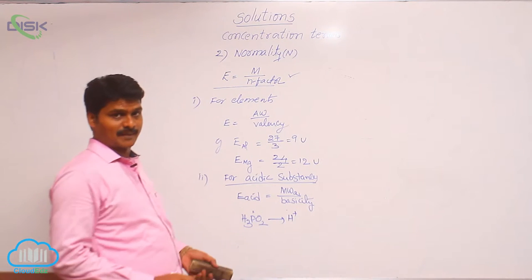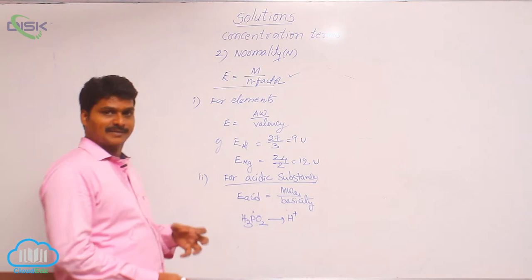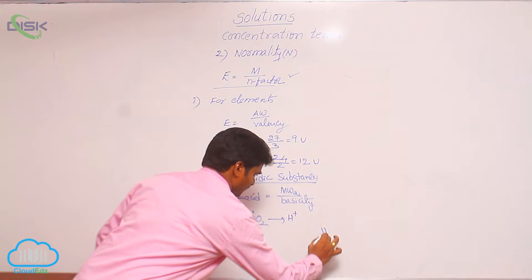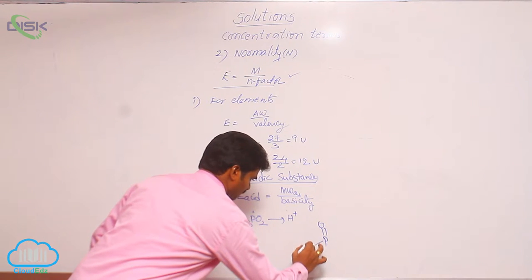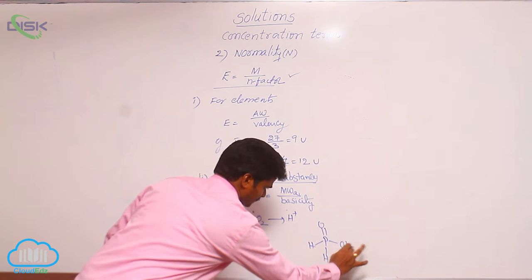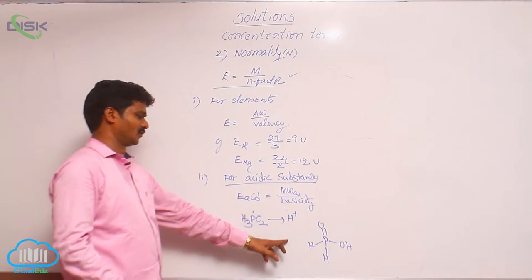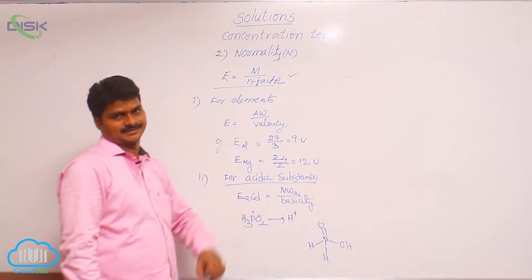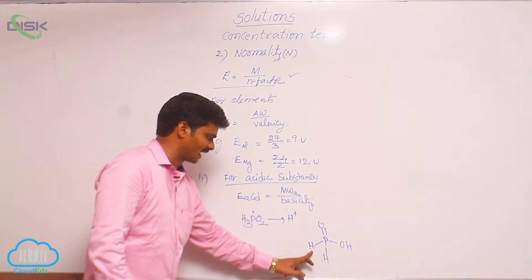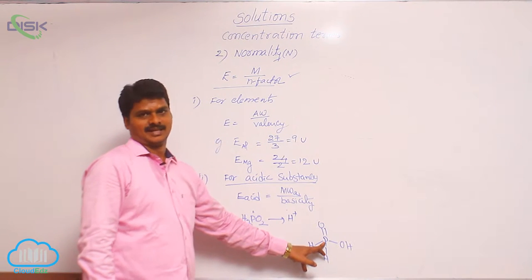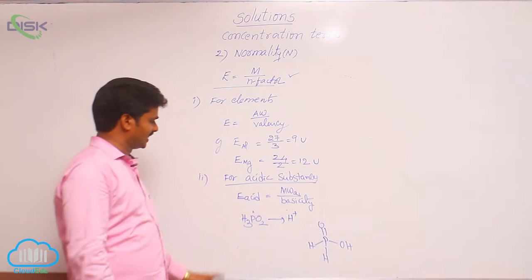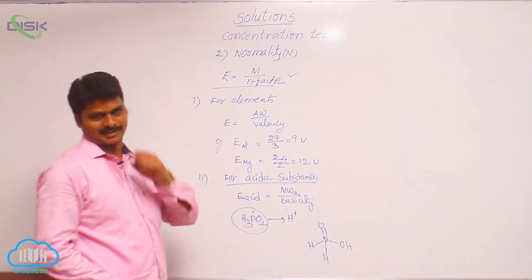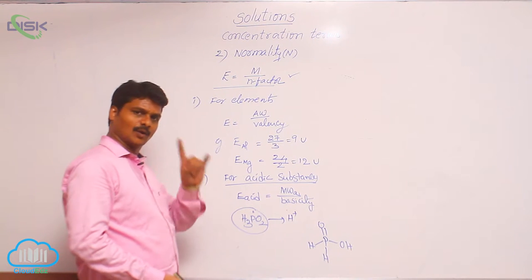In acids, basicity is derived from the structure. If you take the structure of H3PO2: only the hydrogens on oxygen are liberated as H⁺. The hydrogens which are attached directly to the phosphorus element are not liberated. That is why, even though the formula contains 3 hydrogens, it can give only 1 H⁺, and its basicity is only 1.